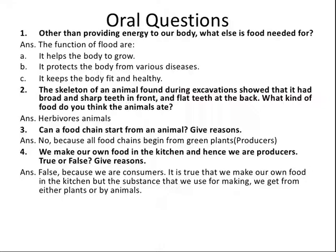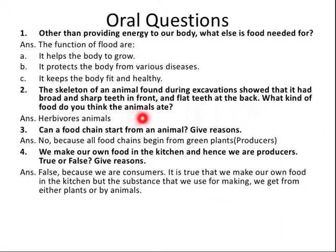Next question: the skeleton of an animal found during excavations showed that it had broad and sharp teeth in front and flat teeth at the back — what kind of food did the animal eat? Animals with sharp teeth eat flesh. So this animal was a carnivore that ate the flesh of other animals.